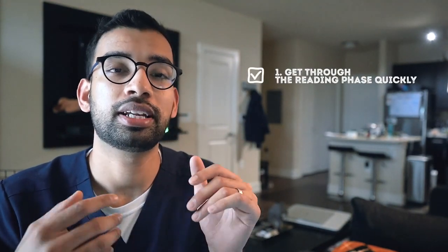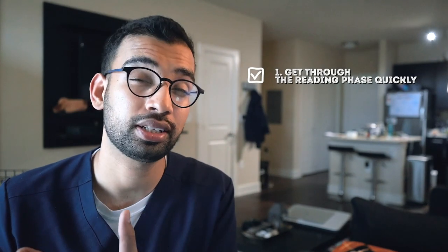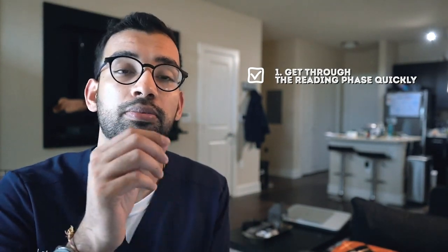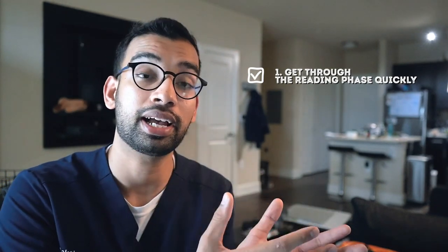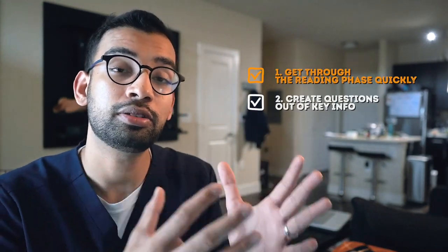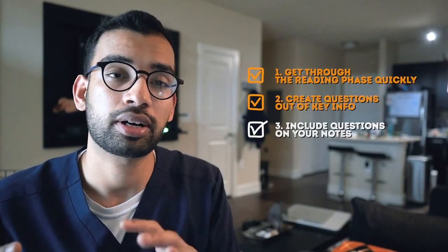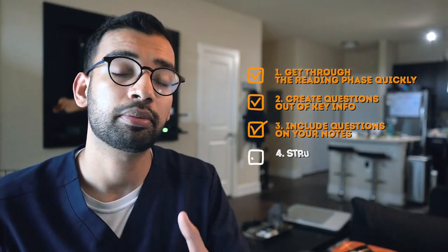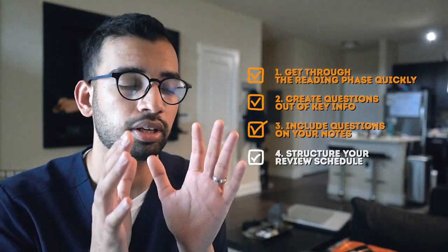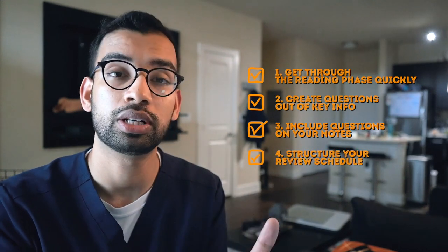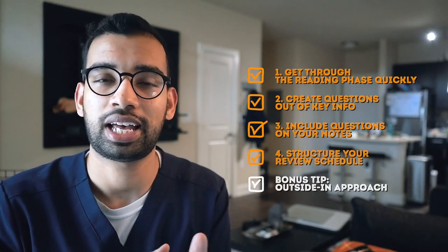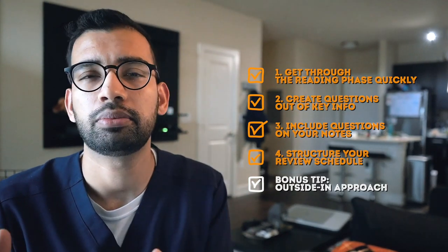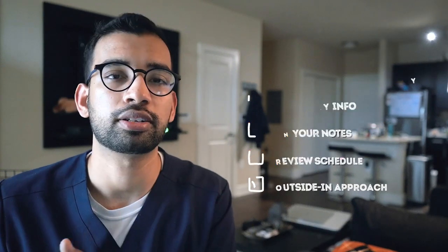To review: to get the most out of your reading, step one is to systematically go through the material as quickly as possible without so many stop-and-goes, marking topics you consider important so you can come back to them. Step two is to go to those important pieces of information and convert them into questions. Step three is to take those questions and include them in your word processor notes, physical notebook, or on the actual text itself. Step four is to have a very predicted review schedule so you know exactly which hour of the week you're reviewing which lecture. And as a bonus tip, try the outside-in approach for a more authentic review process that feels more like the actual exam.